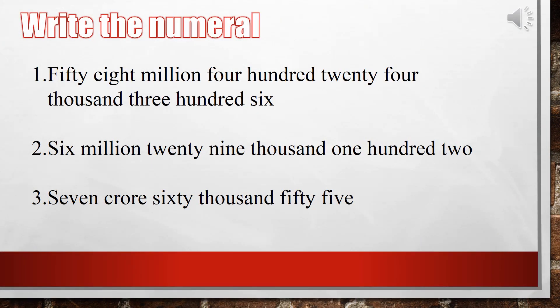Some number names are given below — write each as a numeral. First: fifty-eight million, four hundred twenty-four thousand, three hundred six. Second: six million, twenty-nine thousand, one hundred two. Third, in the Indian place value system: seven crore, sixty thousand, fifty-five. Write all these numbers in numerical form.